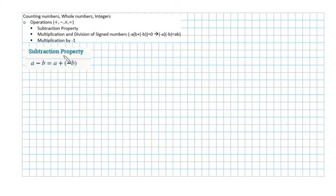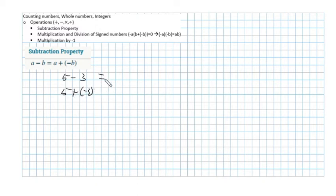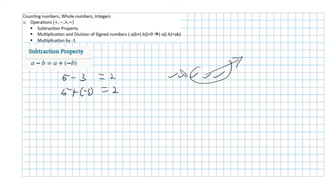The subtraction property — very important: a minus b is the same as a plus a negative b. Let's take a look: 5 minus 3 is the same as 5 plus a minus 3. In both cases, we get 2. Using our x's and check marks: I have 5 check marks, and I take away 3 of them, which leaves me with 2 check marks. Or, I have 5 check marks and I add 3 x's — each pair cancels to zero — and I'm left with 2.